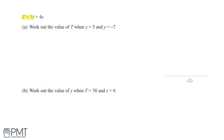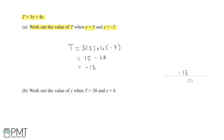We are given t = 3x + 4y and asked to find t when x = 5 and y = −7, for two marks. Substituting: t = 3 × 5 + 4 × (−7) = 15 − 28 = −13. You get one mark for correct substitution and one mark for the correct final answer of t = −13.